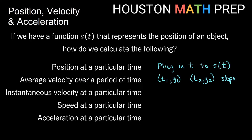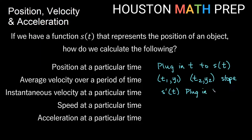For instantaneous velocity at a particular time, we want the slope of the tangent line. To find that for s of t, we first find s prime — the derivative — which gives us the formula for instantaneous velocity everywhere on the function. Then we plug in the specific t value where we want that instantaneous velocity.